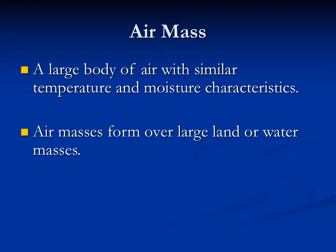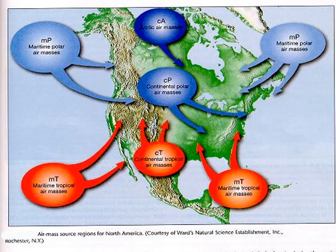Now that we have some background, we can talk about actual air masses and what they are. An air mass is literally just a big body of air — a big, huge chunk of air — and within that chunk there are similar temperatures and moisture characteristics. Air masses form over large land or water masses and then they move.